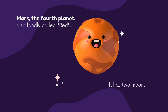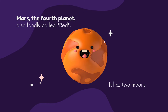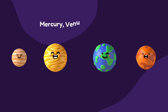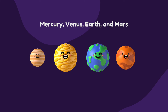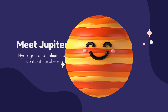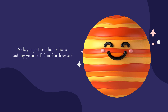Mars is the fourth planet. Let's name the first four planets now: Mercury, Venus, Earth, and Mars. Jupiter is the largest planet among all.